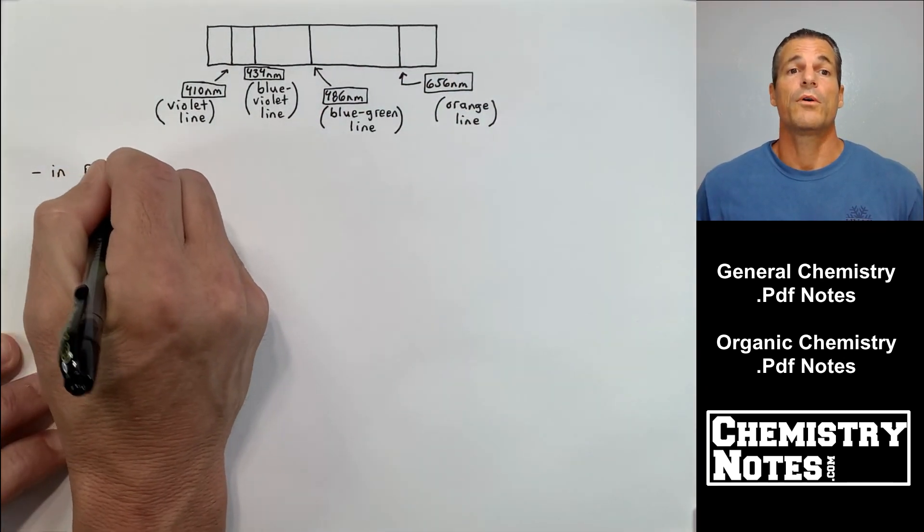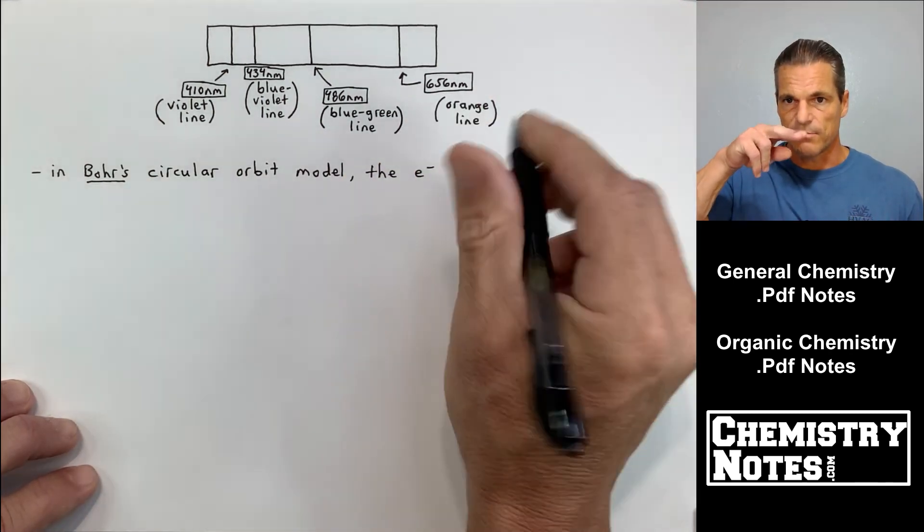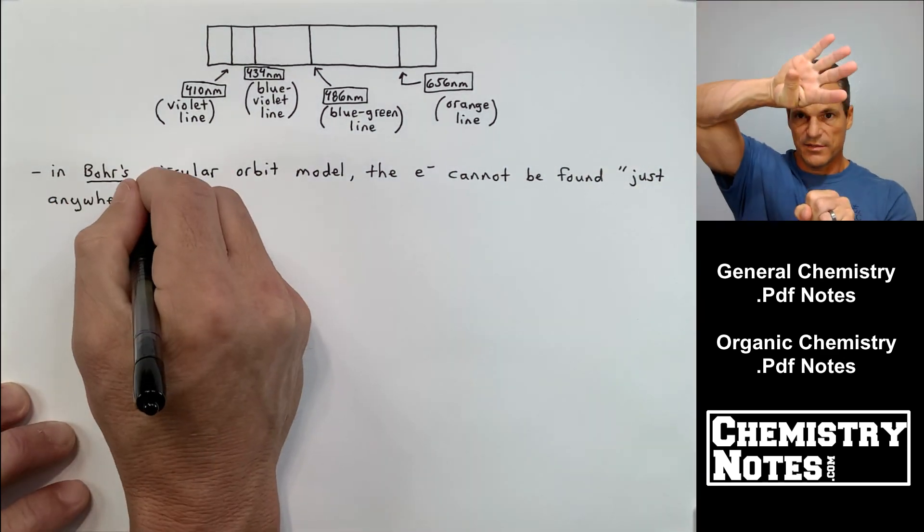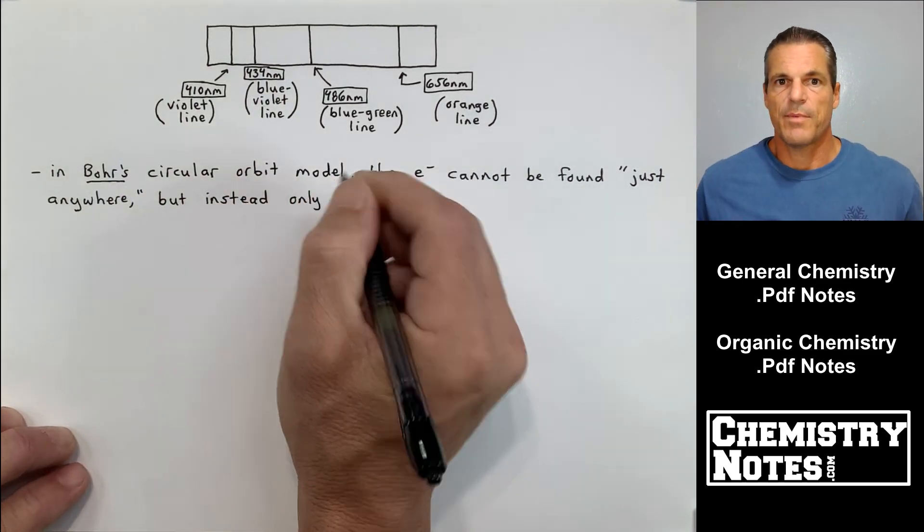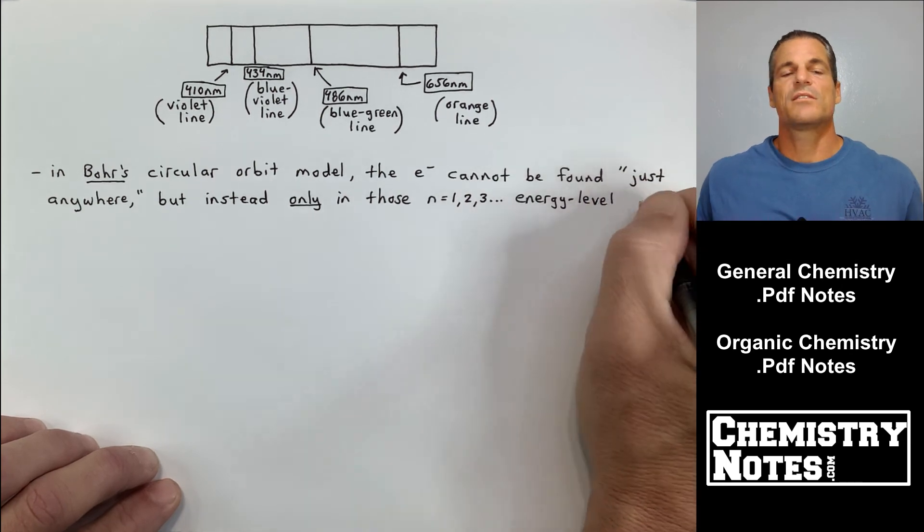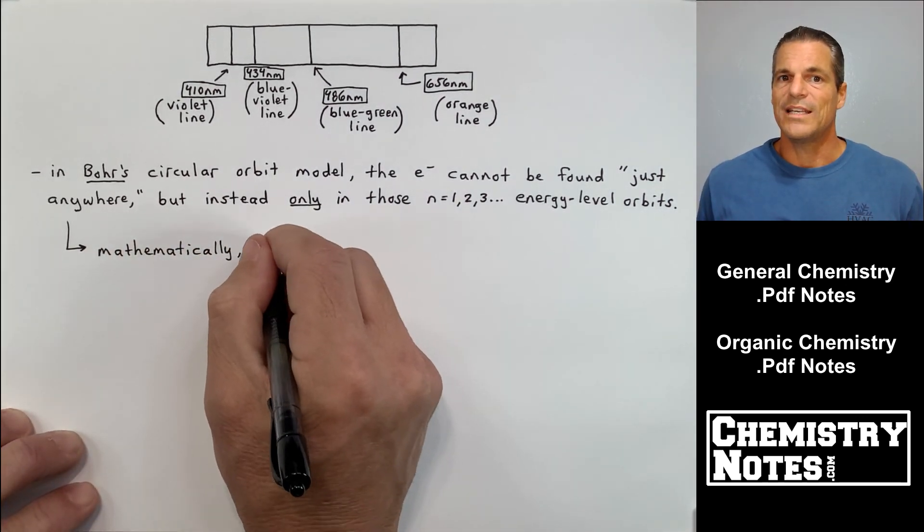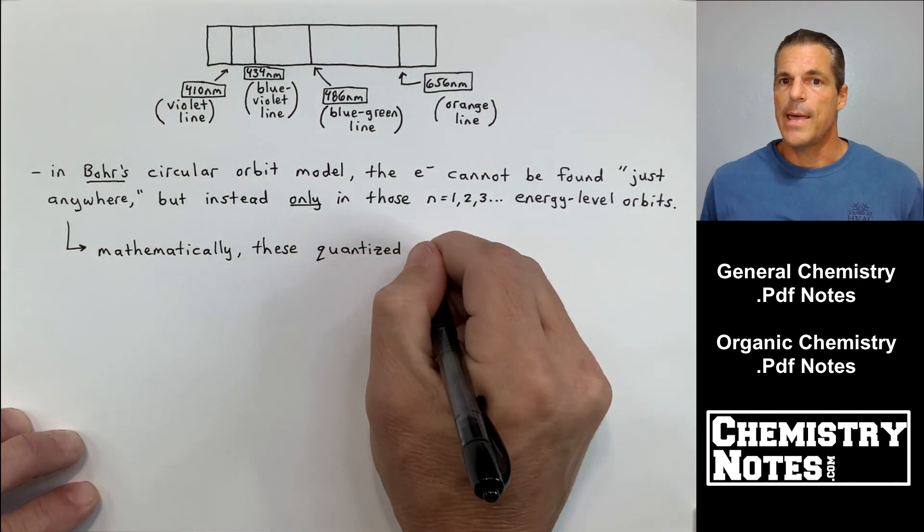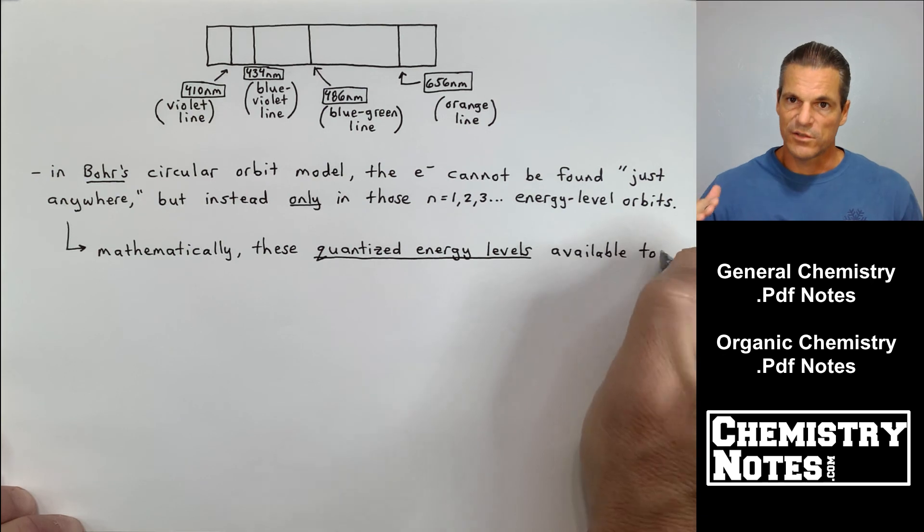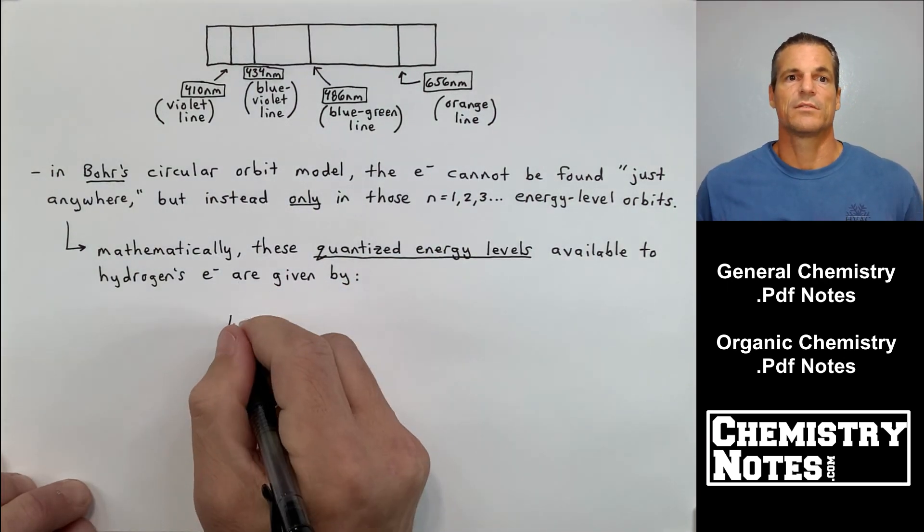Now in Bohr's circular orbit model, the electron cannot be found just anywhere it wants. It can't be found just at any energy level. The electron cannot be found just anywhere, but instead only in those n equals 1, 2, 3 energy level orbits, those quantized energy levels. Remember in the last video, I talked about going up stairs versus walking up a gradual incline. You can only go up certain elevations at a time, these packets or these quantum levels.